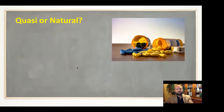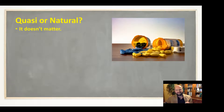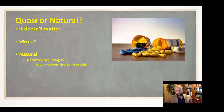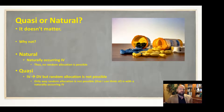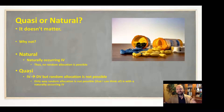A question I get asked a lot: what's the difference between quasi and natural experiments? My answer — and it doesn't matter for Paper 3. A natural experiment has a naturally occurring independent variable, so I can't randomly allocate who's in which condition because the conditions already occurred naturally. A quasi experiment is one where random allocation is not possible — and the only way random allocation isn't possible is if I wasn't the one who created the conditions, meaning they were naturally occurring.